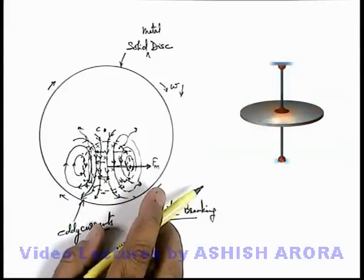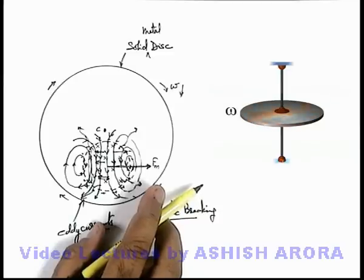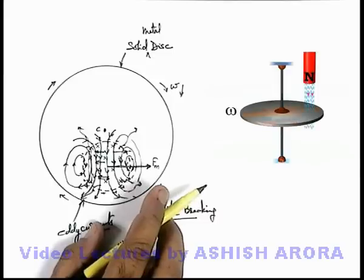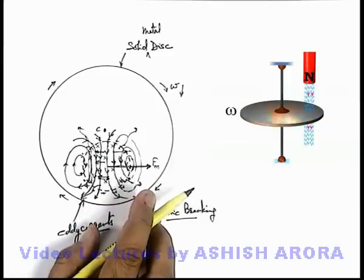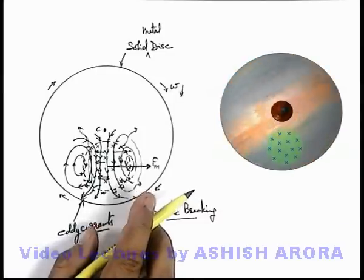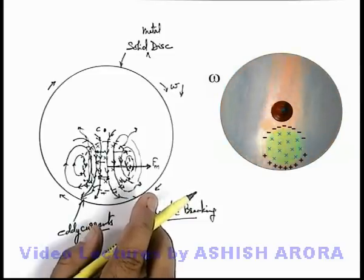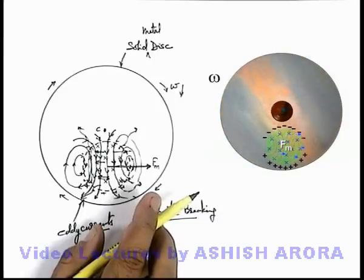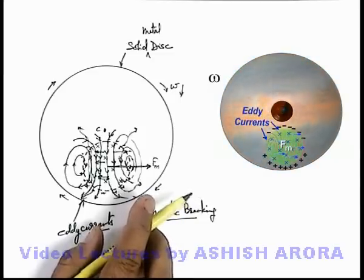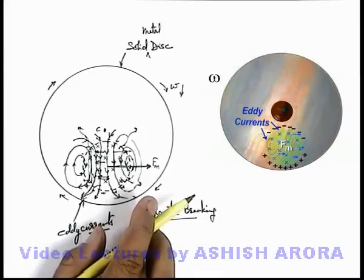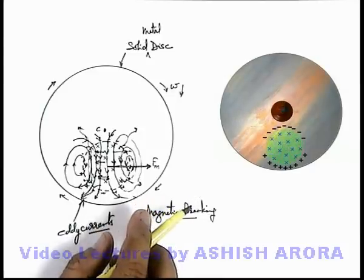Looking at a realistic situation, a real metal disc is rotating about its axis of rotation. When a uniform magnetic field is applied over a cylindrical region covering a section of this disc, braking action starts and the angular speed begins to decrease. A closer top-view look confirms the same phenomenon: due to the magnetic field and motion of the conductor, eddy currents are produced; these eddy currents experience opposing magnetic forces at various points within the magnetic field region on the disc; and due to the torque of this force, omega decreases until the disc eventually comes to rest. This is the phenomenon called magnetic braking.